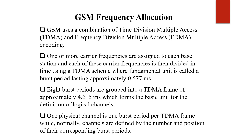One or more carrier frequencies are assigned to each base station, and each carrier frequency is then divided in time using TDMA. The fundamental unit is called the burst period, which is 0.577 milliseconds. Eight burst periods are grouped into one TDMA frame of approximately 4.615 milliseconds — that is, 0.577 multiplied by 8 — which forms the basic unit for the definition of logical channels.